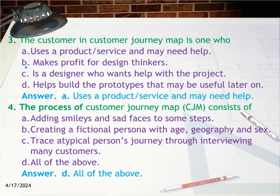Question 4: The process of Customer Journey Map (CJM) consists of — Option A: Adding smileys and sad faces to some steps. Option B: Creating a fictional persona with age, geography, and sex. Option C: Trace a typical person's journey through interviewing many customers. Option D: All of the above. Answer: D — All of the above.